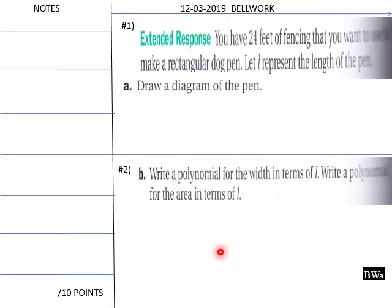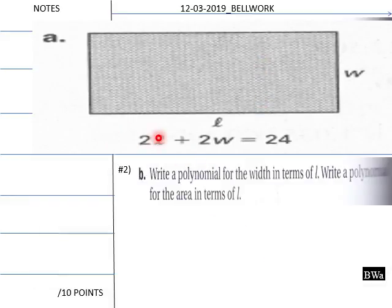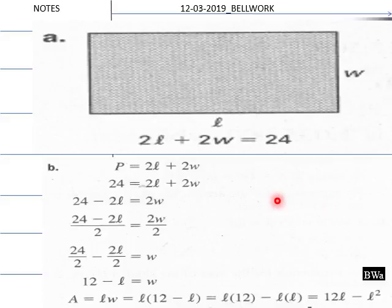Welcome back for the solutions of our bellwork. Here is a diagram for the dog pen. 2L plus 2W equals 24 — we've got a perimeter there. To write the polynomial for the width in terms of L, the width equals 12 minus L after we solve for W. Then the area equals length times width, which equals L times (12 minus L), giving us our expression for area in terms of L.